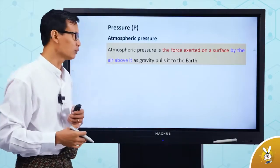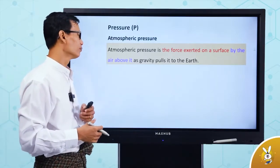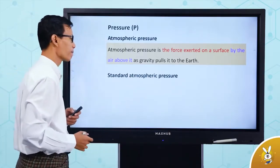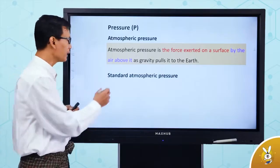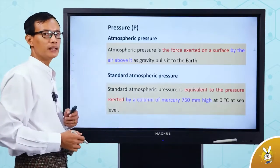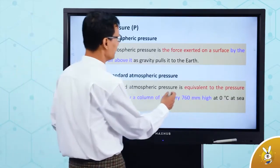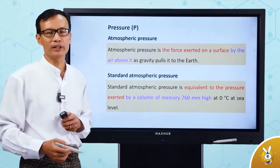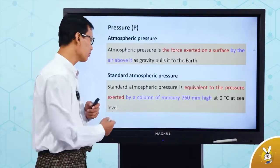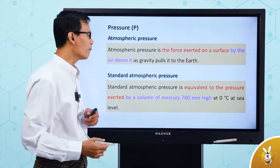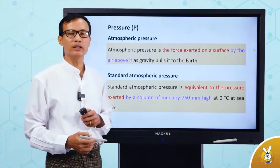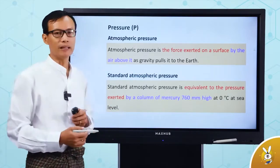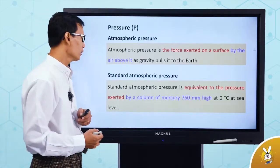Atmospheric pressure. Standard atmospheric pressure. Standard atmospheric pressure is equivalent to the temperature of the earth — by a column of mercury, 760 mm high, at sea level.